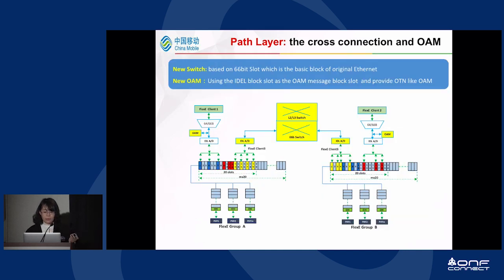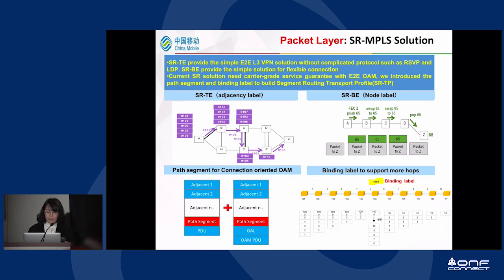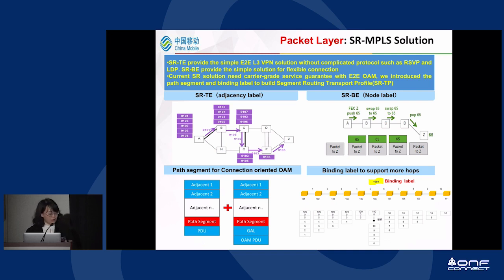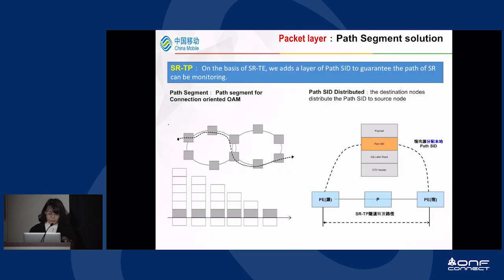Next, we discuss cross connection and OEM, using a new switch and new OEM for the SPN network. For the SR/SRTP solution, SR provides a simple end-to-end layer 3 VPN solution without complicated protocols such as RSVP and LDP. SRBE provides a simple solution for flexible connections. The current SR solution needs carrier-grade service guarantee with end-to-end OEM. We introduced path segment and binding label to build a Segment Routing Transport Profile. On the basis of SRTP, we add a layer of path SID to guarantee the SR path, which can also be monitored.